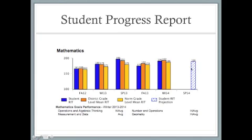A parent might also notice that over on this side is the goal, and it has dashes throughout the bar. So from the fall score of 174, we would hope that this student would grow to 188 RIT by the end of the year. This bar is set individually for each student in such a way that only 50% of students will actually reach that number — so if 50% do, 50% don't.